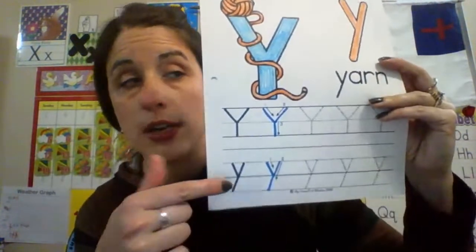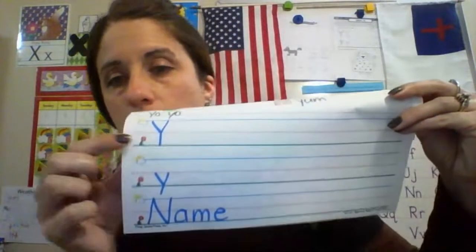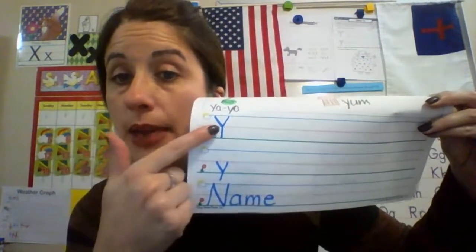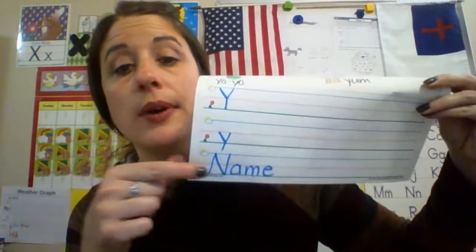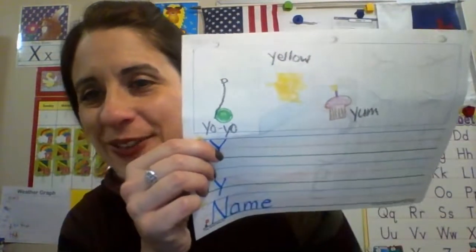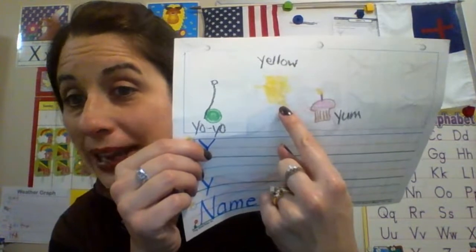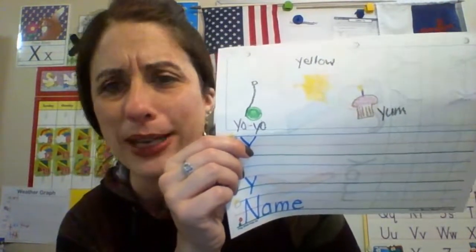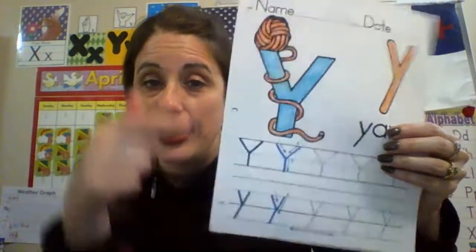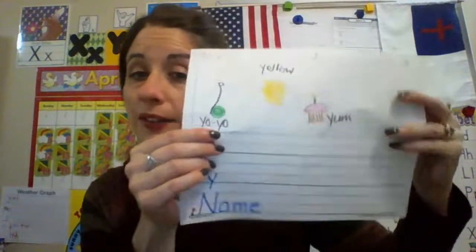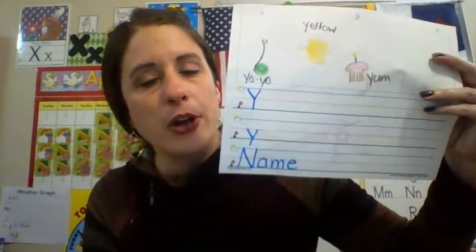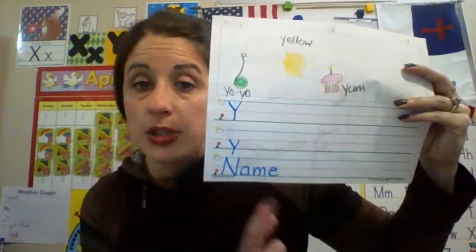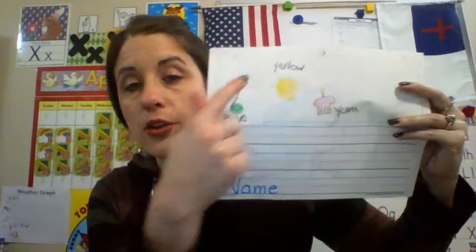Color and trace on the front of your page. Turn over your paper and do uppercase Y's, lowercase y's, and your name. If you need a grownup to write the first one so you know what it looks like, that's okay — I always do that for you at school. Write your name. I drew a yo-yo like the one Gavin let me borrow, a big splotch of yellow paint scribbled in a big circle, and a cupcake with a candle with 'yum' beside it — because cupcakes are so yummy! If you know your first name well, start working on your last name using your tracer sheets.